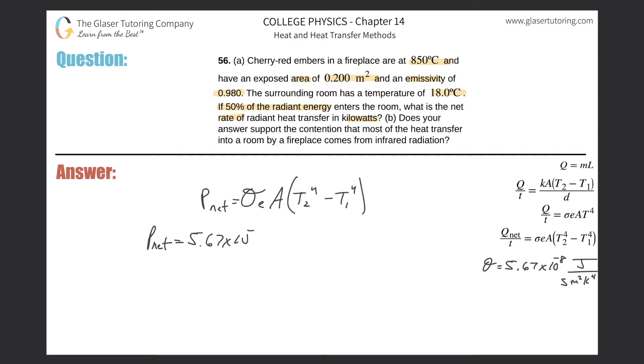The emissivity they told us, which was 0.98. That's great. The area, they tell us that. Exposed area 0.2 meters squared. So 0.2. I don't have to do any conversions there.